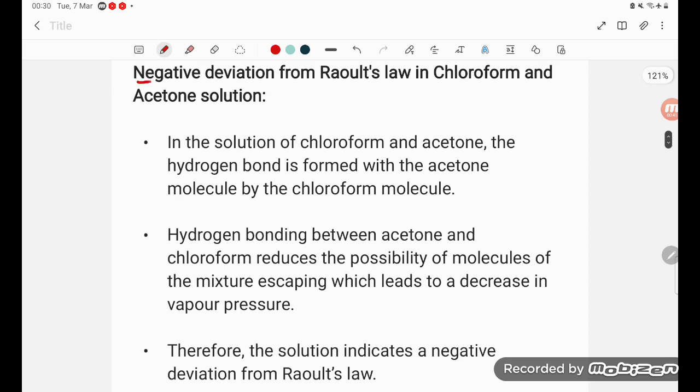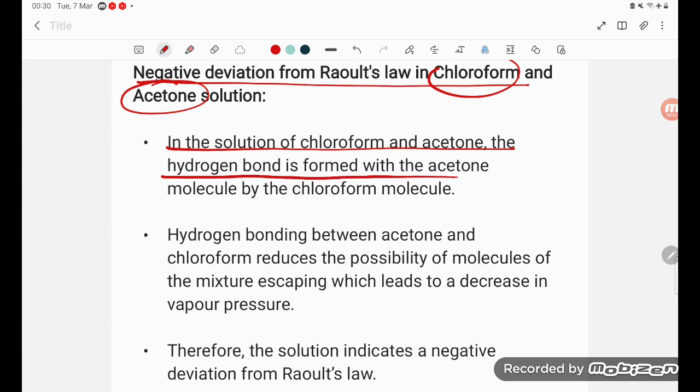The cause of the negative deviation from Raoult's law in chloroform and acetone is strong hydrogen bonding. In the solution of chloroform and acetone, the hydrogen bond is formed with the acetone molecule by the chloroform molecule.